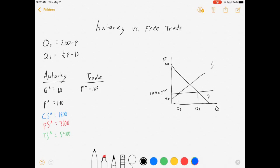Our quantity demanded, let's figure out what that is actually real quick and then we'll come back to it. Quantity demanded equals 200 minus P is 100, and quantity supplied equals one-half times P minus 10 is 40.